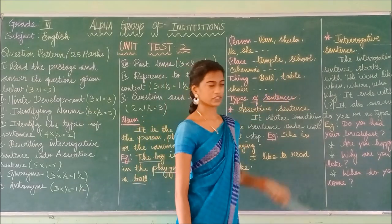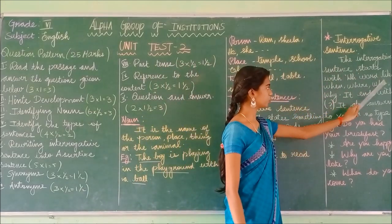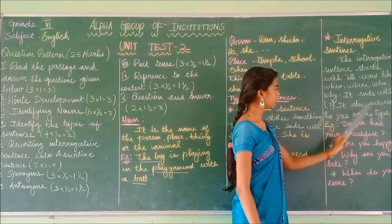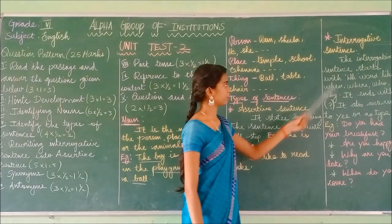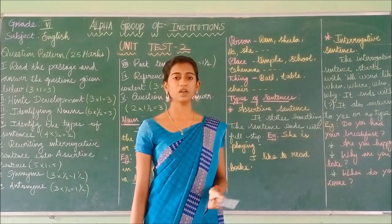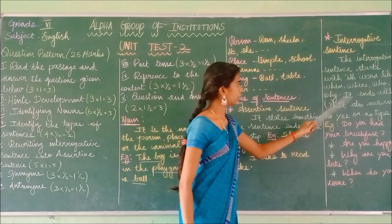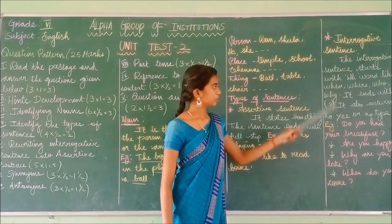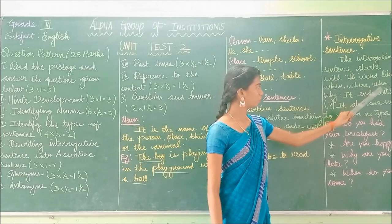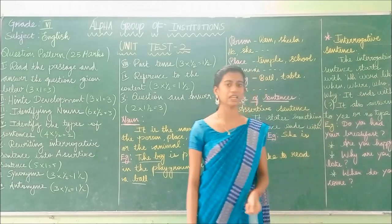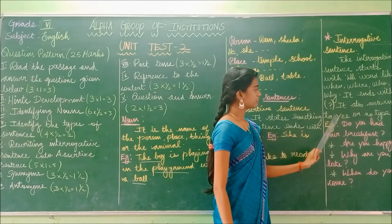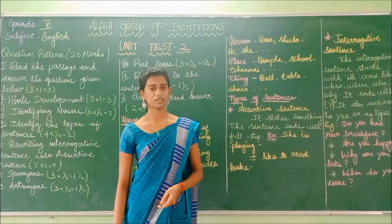An interrogative sentence starts with a WH word — when, where, who, why — and ends with a question mark. It also answers to a yes-or-no type question. The WH words are words that start with the letters W-H. In the interrogative sentence, the sentence always ends with a question mark.